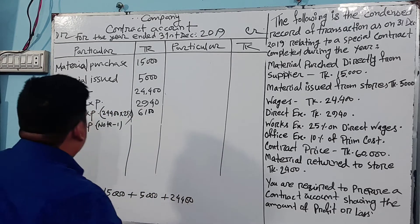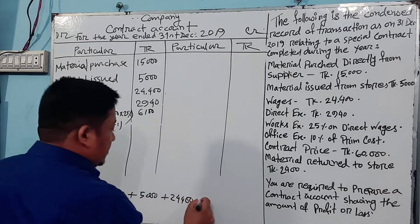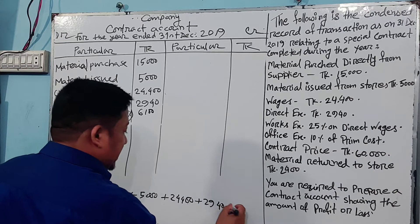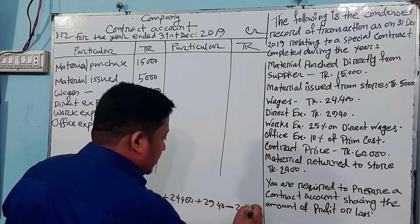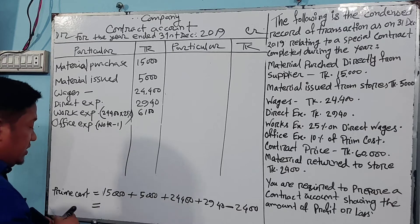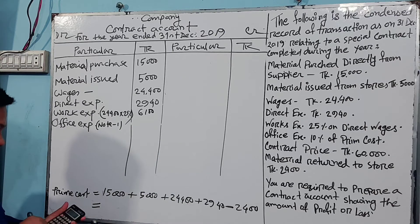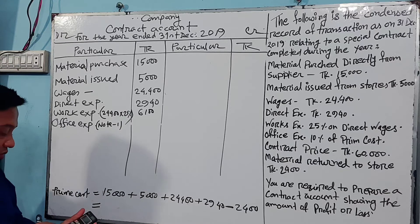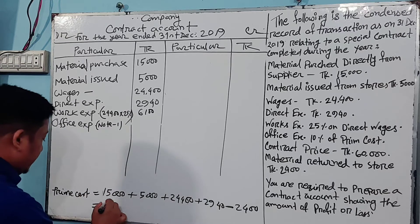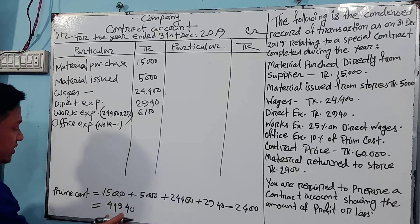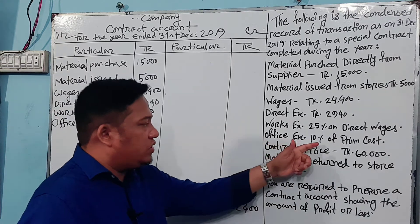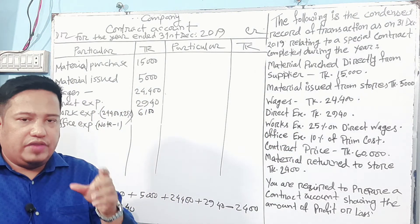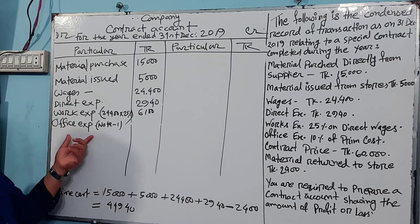24,400 plus direct expenses 2,940 minus materials returned to store 2,400, minus 2,400 equals prime cost of 44,940. This is the prime cost. Office expenses are 10% of prime cost.